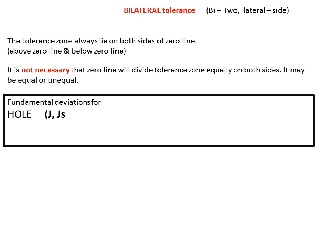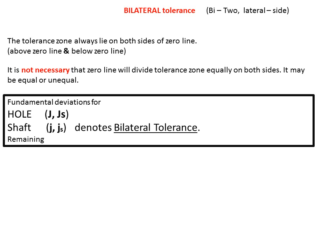Fundamental deviations for bilateral tolerances are J and Js. All remaining fundamental deviations denote unilateral tolerance. If you like this video, don't forget to hit the like and subscribe button.